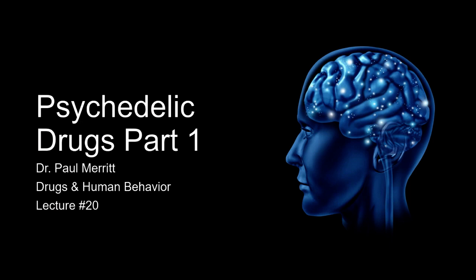Hello and welcome to lecture number 20. We're going to start moving into talking about different types of psychedelic drugs. In this particular lecture, we're going to talk about scopolamine, mescaline, and methylene-dioxymethamphetamine, or ecstasy. We'll talk about a few others along the way, such as some synthetic amphetamines. In the second part of this lecture, lecture number 21, we'll take a look at other drugs such as ketamine and also some potential therapeutic uses for some of these drugs.